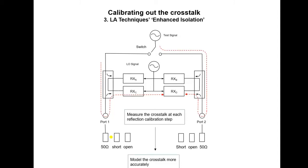In fact, we make a total of four crosstalk measurements: 50 ohms, short, open, and also a fourth isolation step. That gives us four sets of measurements that allow us to more accurately predict the behavior of the crosstalk as a function of the match we present to ports 1 and 2.